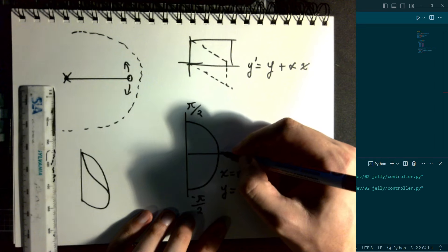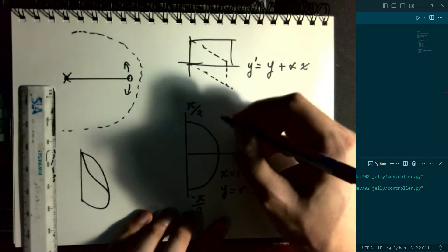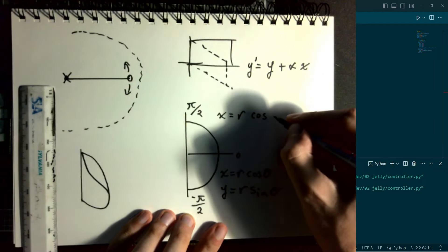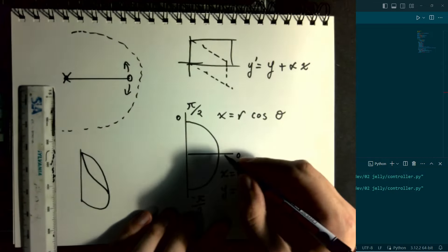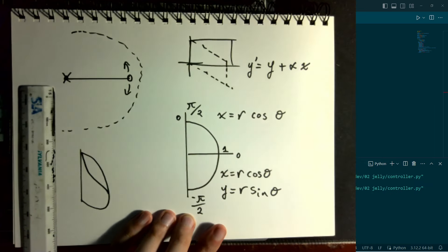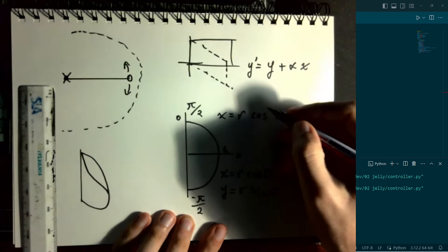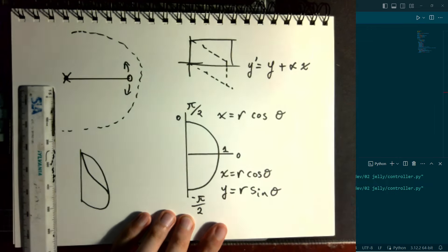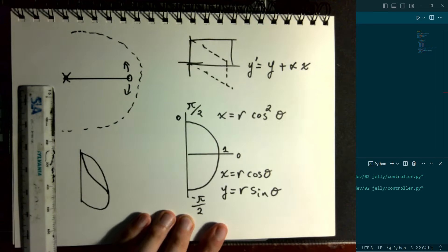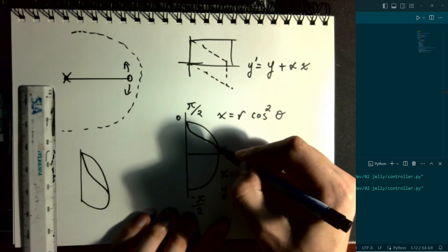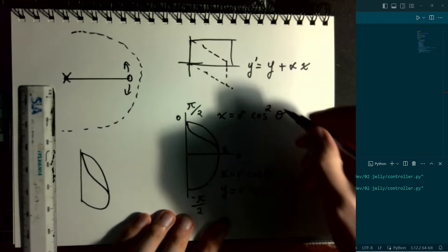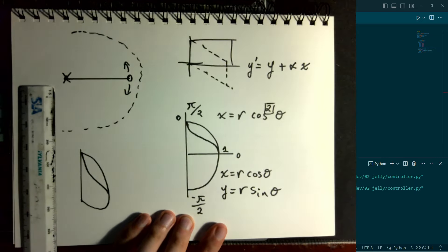We'll have x equals some radius times cosine theta, y equals some radius times sine theta. When x is pi over 2, cosine of pi over 2 is 0, and cosine of 0 is 1. So I've got some function which varies from 0 to 1, but I just want to change the concavity of it. It turns out we can accomplish this by taking cosine to any power.